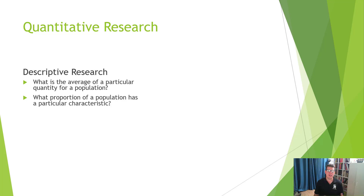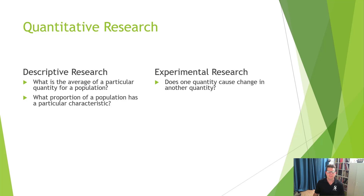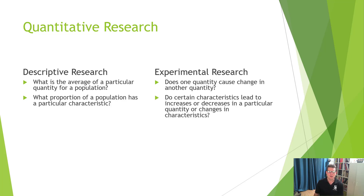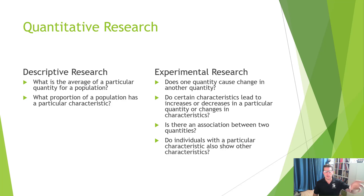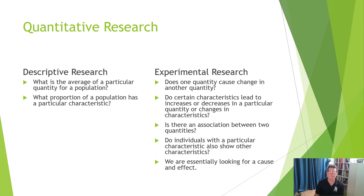Descriptive research might also look at what proportion of a population has a particular characteristic. Experimental research — which is the one you'll be doing your projects on — involves developing an experiment to ask: does one quantity cause change in another, or do certain characteristics lead to increases or decreases in particular quantities, or is there an association between two quantities? That's the kind of thing we look at in experimental research — it's all cause and effect.